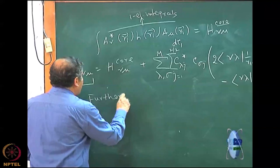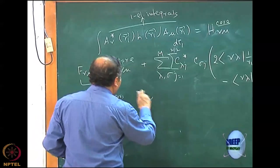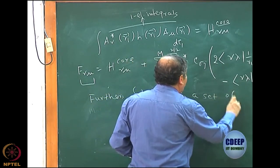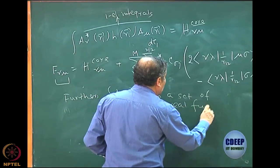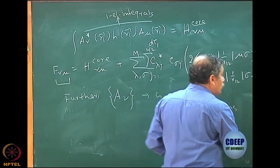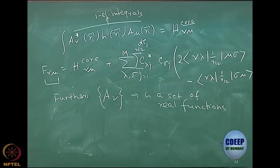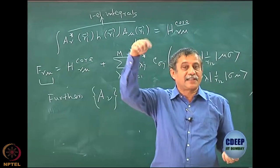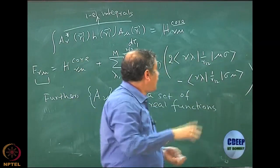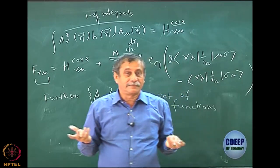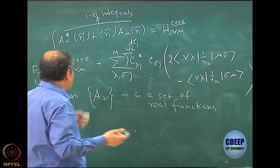What helps is that many times this basis A_mu or A_nu is a set of real functions, and this really helps. Although I want atomic orbitals, it will be useful to use real functions, and this is where the Cartesian p or d functions are really helpful. So you only use pz, px, py and do not use exponential i*phi or exponential minus — then it becomes complex. Because if it is a real function, this star is itself, and that introduces several simplifications.